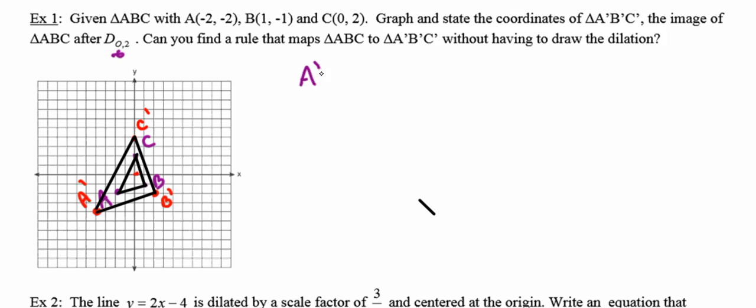A' has coordinates (-4, -4). B' has coordinates (2, -2). And C', of course, lies at the point whose coordinates are (0, 4).